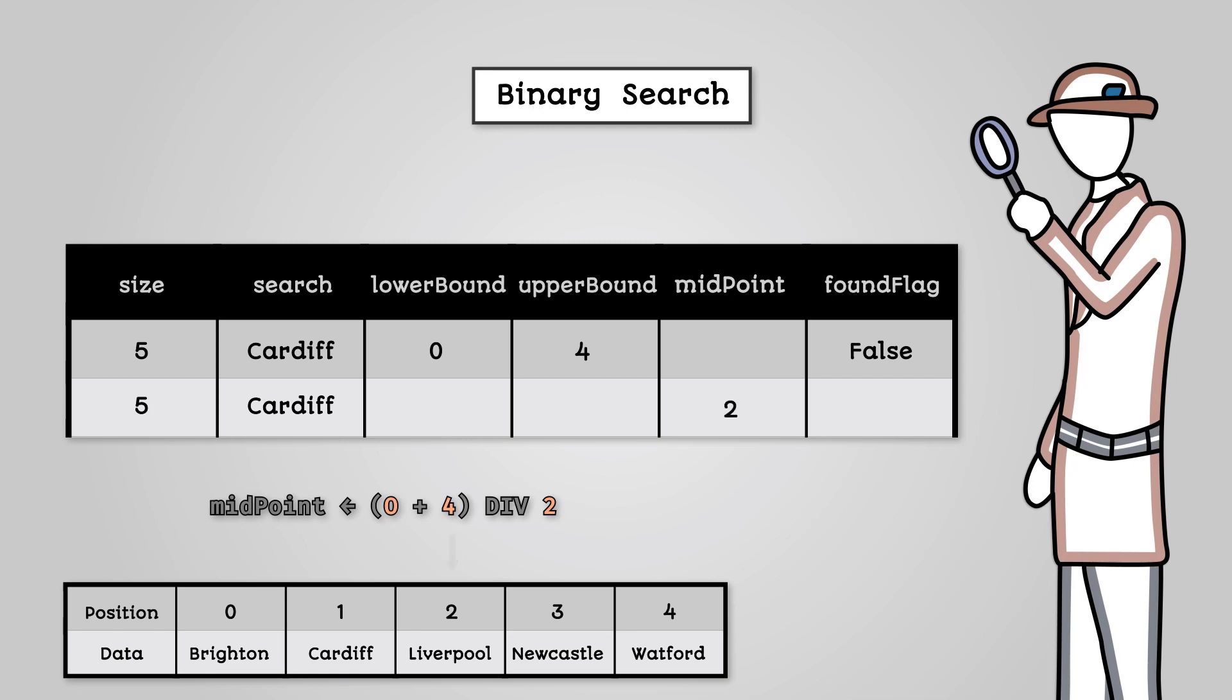We then check whether the list value at index 2 is equal to what we're searching for. The list value at index 2 is Liverpool which is not equal to Cardiff so nothing happens. We then check if Liverpool is below Cardiff alphabetically. It isn't so nothing happens. Finally we check if Liverpool is above Cardiff alphabetically. It is so we set the upper bound of our list to the left of our current midpoint. This is 1.